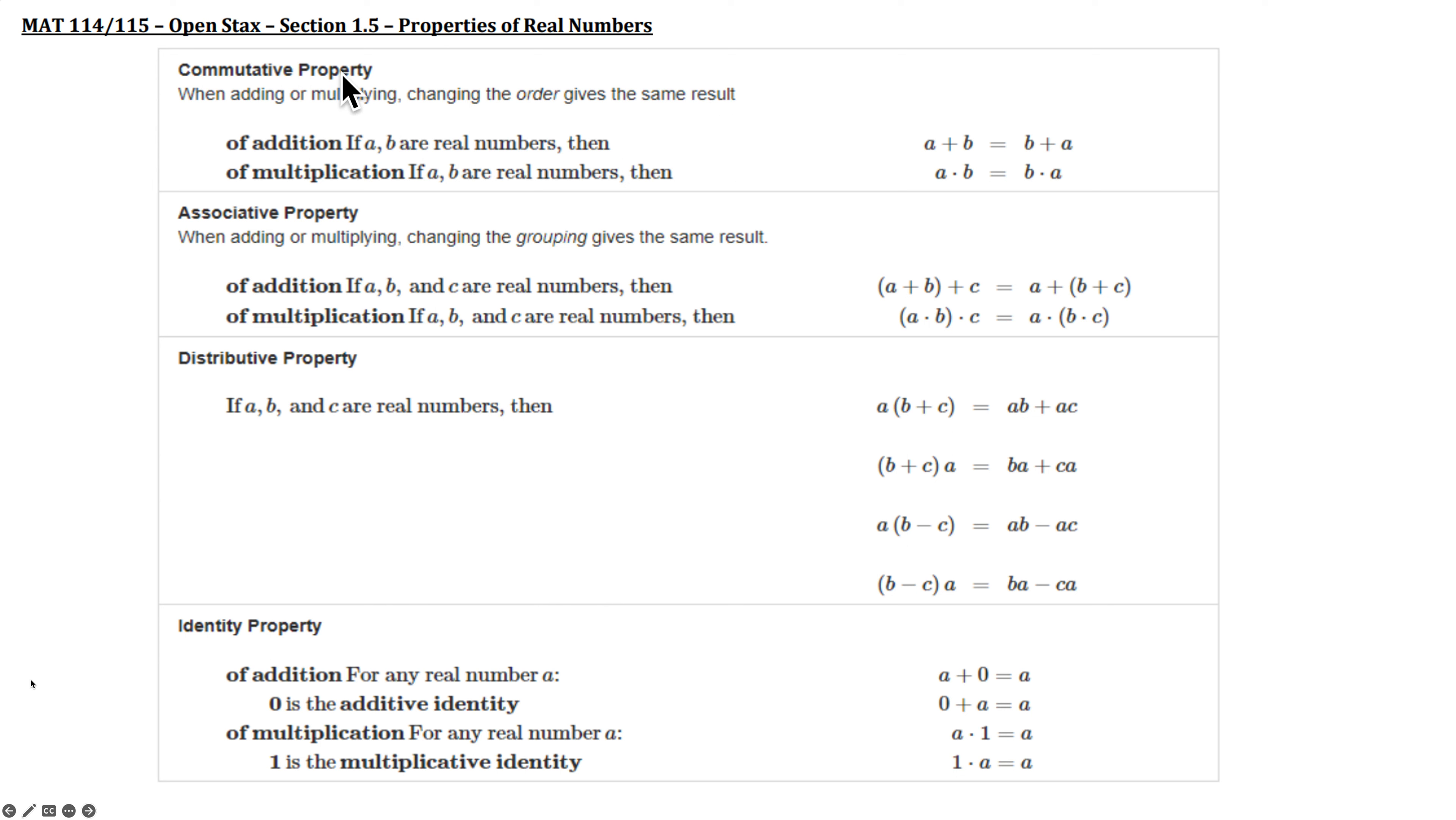So we have what is known as the commutative property of addition. This is when A and B, in both cases, we're adding and multiplying. They're real numbers. A plus B is the same as B plus A. I physically change their order. And this holds true for multiplication as well. So this means the full name of the property, commutative property of addition, commutative property of multiplication. You have to see the work done and recognize the property. So if you see a physical change in order, then you know it's the commutative property.